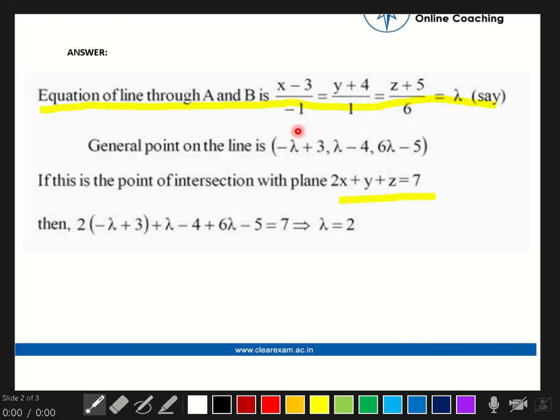Now the general point on the line is found by finding the value of x, y, z in terms of lambda. These are the values: (-lambda + 3) is the value of x, (lambda - 4) is the value of y, and (6lambda - 5) is the value of z. This comes from the equation above.